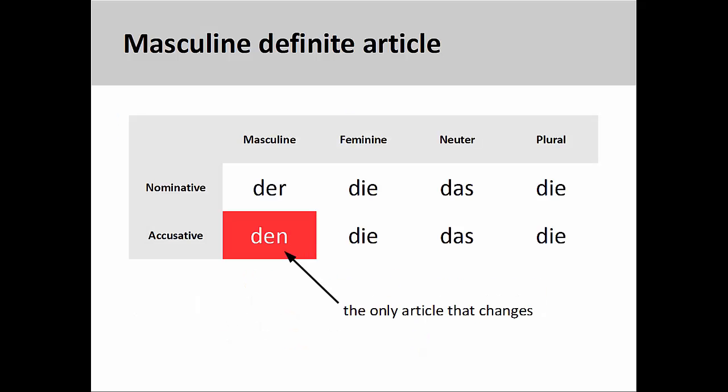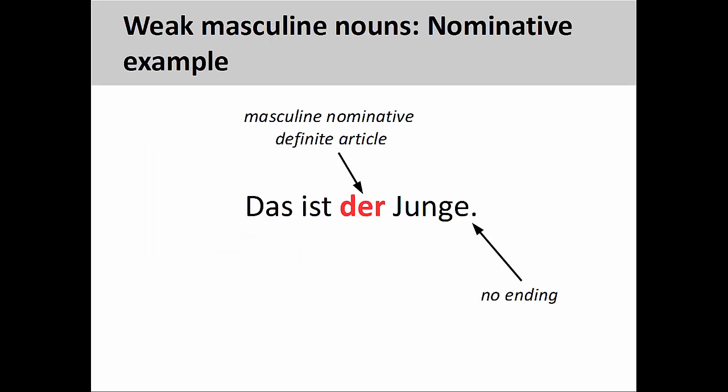You'll recall from an earlier presentation that the masculine definite article changes from der to den as it moves from the nominative to the accusative. Certain masculine nouns also change as they move from the nominative to the accusative. These are called weak masculine nouns. A characteristic of a weak masculine noun is the -en or -n ending that the noun adds in every case except the nominative.